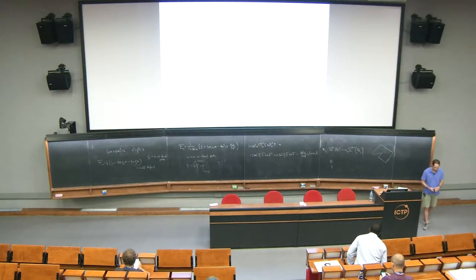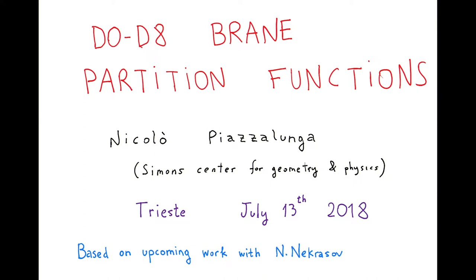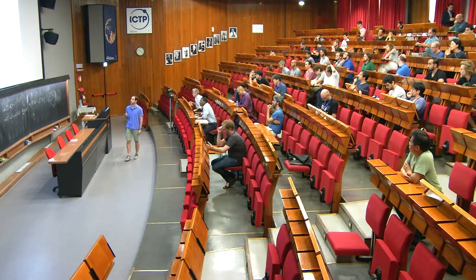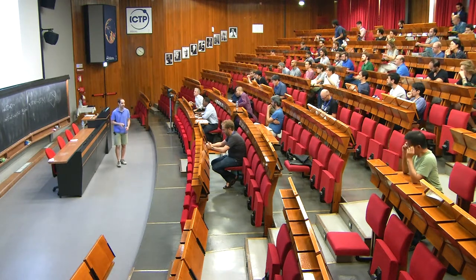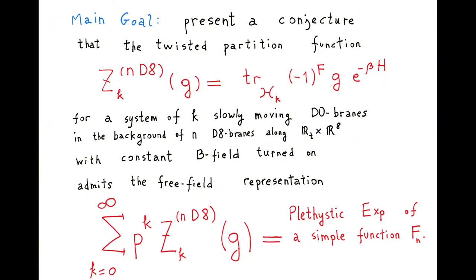The title is 'The 0D8 Brain Partition Functions,' based on some upcoming work with Nikita Nekrasov, and also related to some other work that Nikita himself did last year. Another title for this could be 'Magnificent Four with Color.' The word 'four' stands for four complex dimensions, and 'Magnificent' stands for the belief that four complex dimensions is the highest possible one where one can play this type of game.